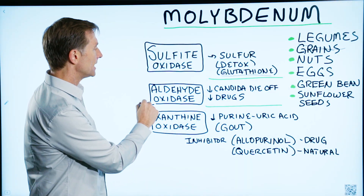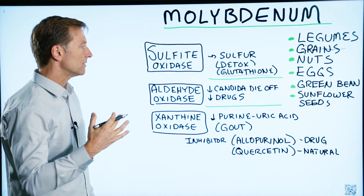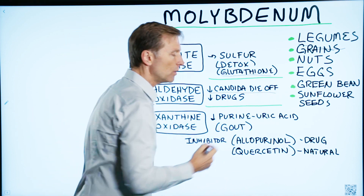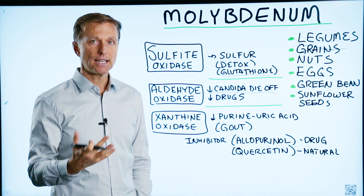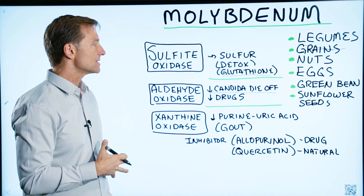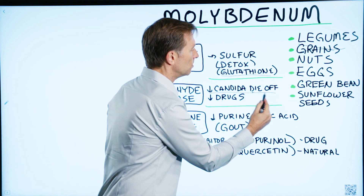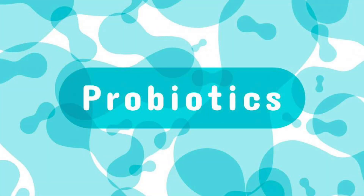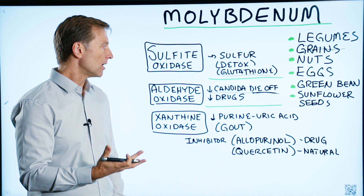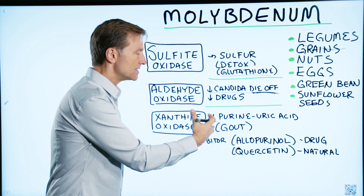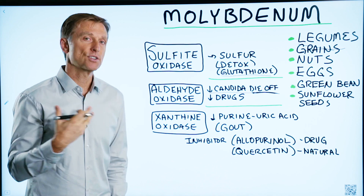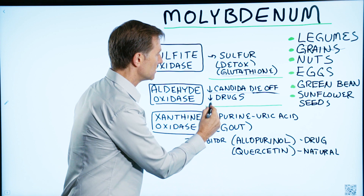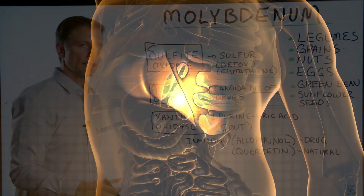Then you have another enzyme, aldehyde oxidase, which is involved in getting rid of the die-off from candida. When you go on a keto plan and you do intermittent fasting, you starve off candida and certain yeast. That can give you a lot of side effects if you don't have this enzyme and you build up too much of the die-off. This also relates to people who take probiotics and they have this reaction — they get the die-off but don't have the enzyme. So these metabolites build up and create a sensitivity or even an allergy reaction. Also, this enzyme is involved in breaking down drugs through the body and through the liver.